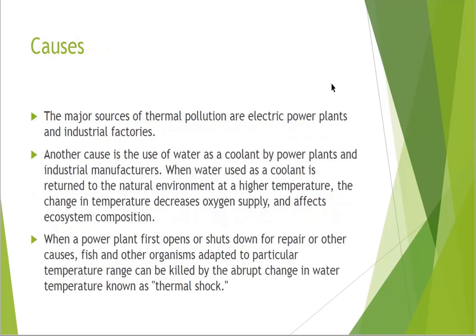The major sources of thermal pollution are electric power plants and industrial factories. Another cause is the use of water as a coolant by power plants and industrial manufacturers. When water used as a coolant is returned to the natural environment at a higher temperature, it changes the temperature, decreases the oxygen supply, and affects the ecosystem composition. When a power plant opens or shuts down, fish and other organisms adapted to a particular temperature range can be killed by abrupt changes in water temperature, known as thermal shock.